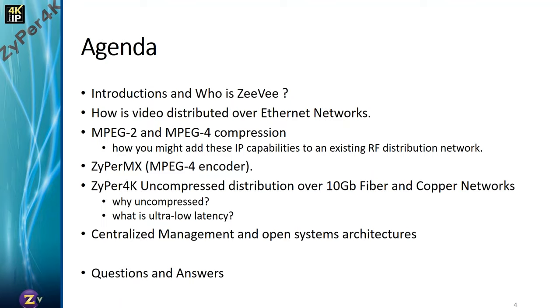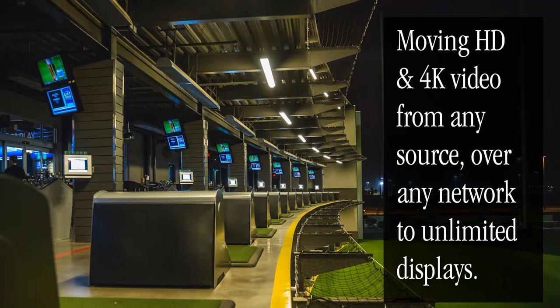Today's agenda covers the transition ZB is undergoing and the broader industry technology transition — specifically the convergence and transition to IP, what IP means to us, various forms of compression, and then our Zyper 4K uncompressed product and how it can solve various problems. As Chris mentioned, those familiar with our coax products know our background is in distribution of video, moving high-resolution sources while maintaining video integrity. As we move into IP, we must maintain those same core values.